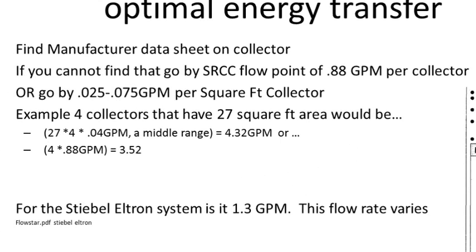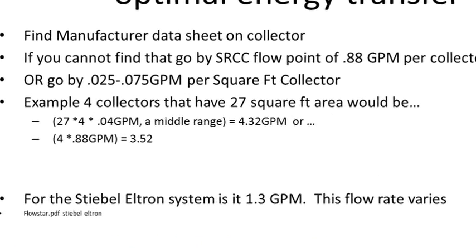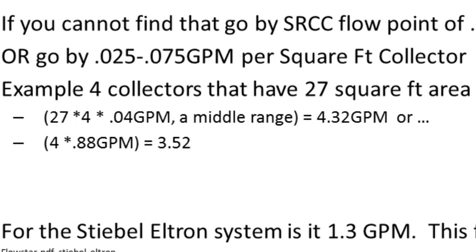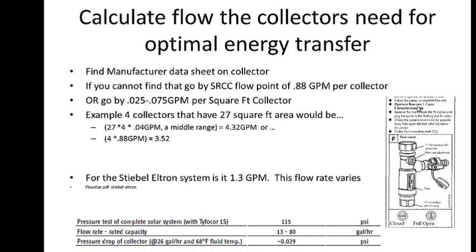If I were to take 0.88 gallons per minute and multiply it by 2, that will tell me the SRCC value — 0.88 gallons per minute per collector, with two collectors on our closed loop system, would be 1.76 gallons per minute. If I had four collectors, each 27 square feet, that would be 27 square feet times 4 collectors times a gallon per minute midpoint of 0.04, giving about 4.2 to 4.3 gallons per minute. You can see we have a variety of figures — this is not a rocket science exact number, but we want to be close. We just want to be in the ballpark.